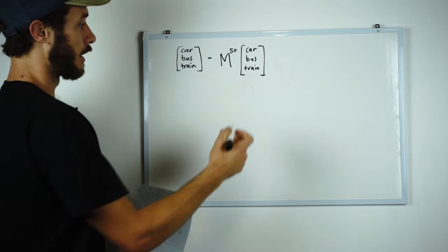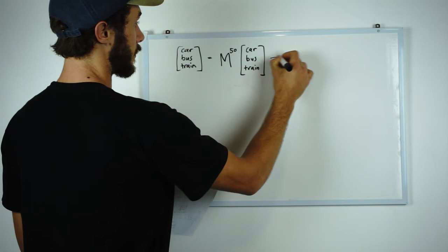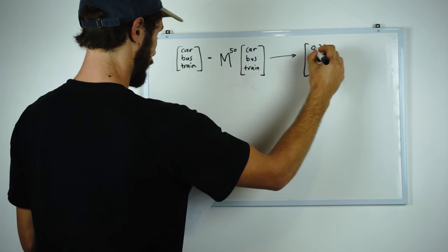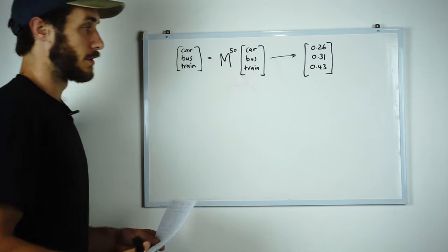The first step then is to find the initial state. We're given the passengers under each mode of transport but not the total percentages. So we need to calculate that and that comes out to be 26% use the car, 31% of passengers take the bus and 43% take the train. So we just use some simple arithmetic to calculate that. And that is our initial state.